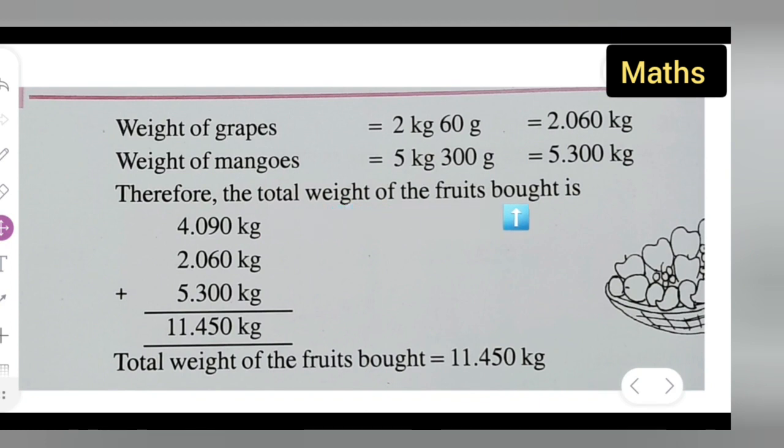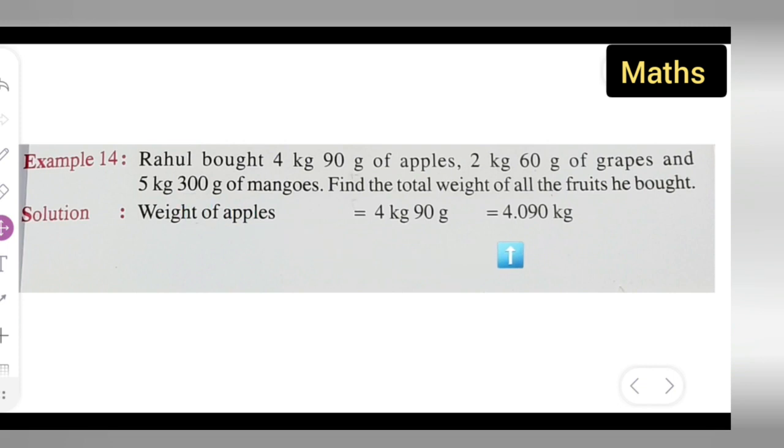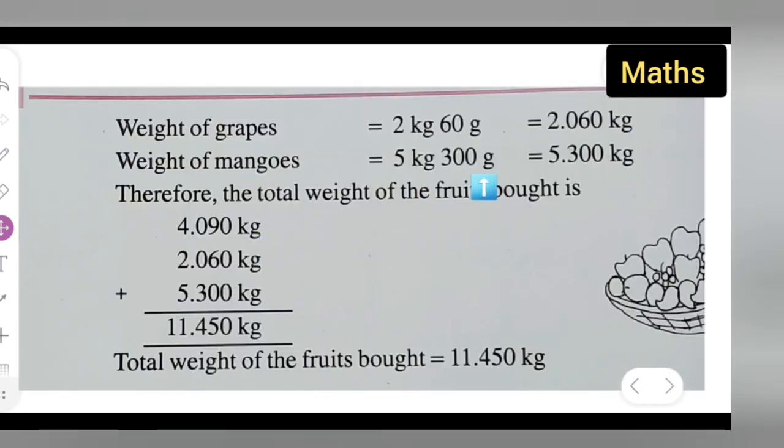the total weight of the fruits bought. Basically, you are adding all these weights: 4.090 kg, then 2.060 kg, and 5.300 kg.